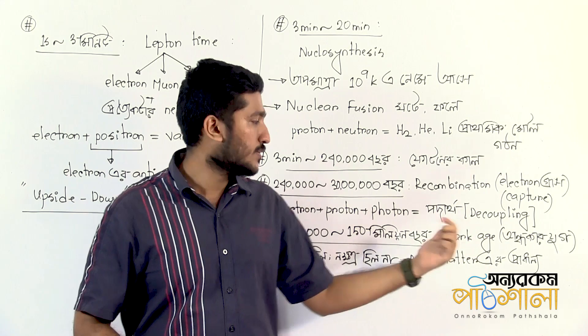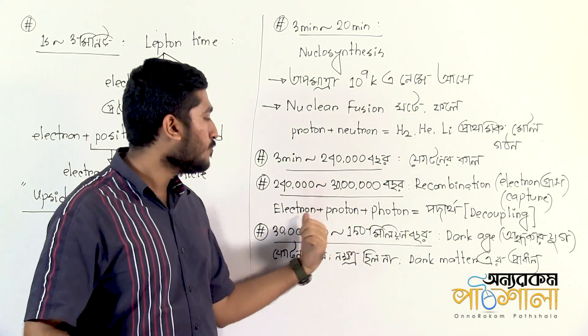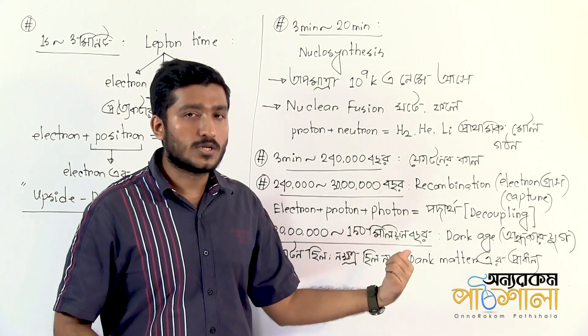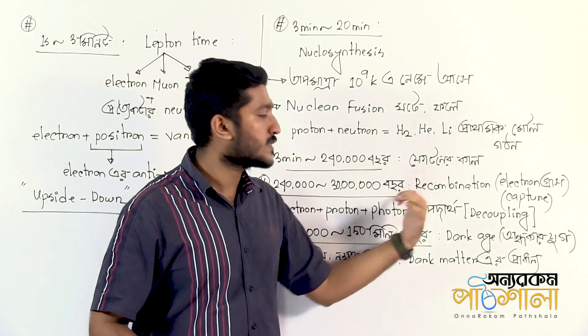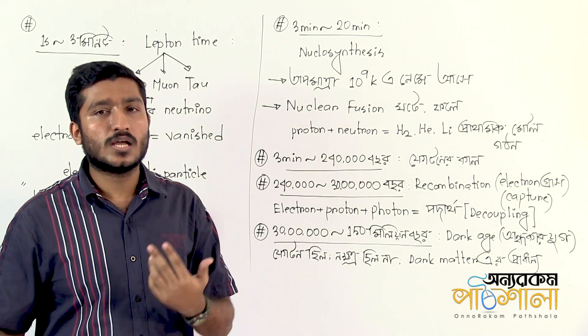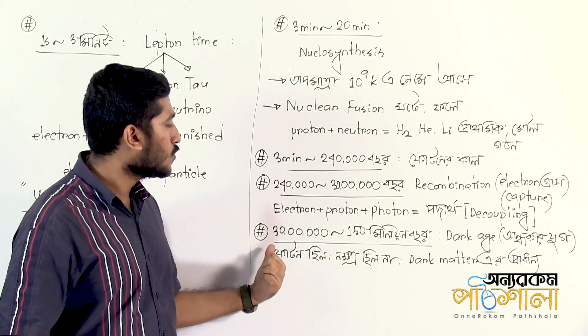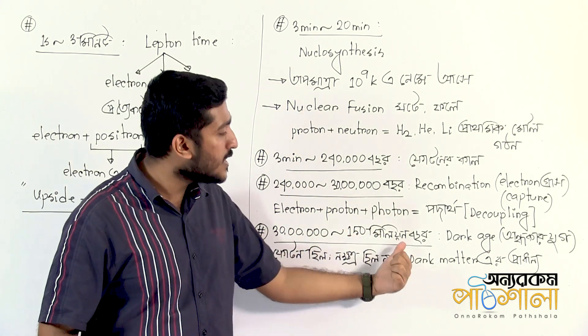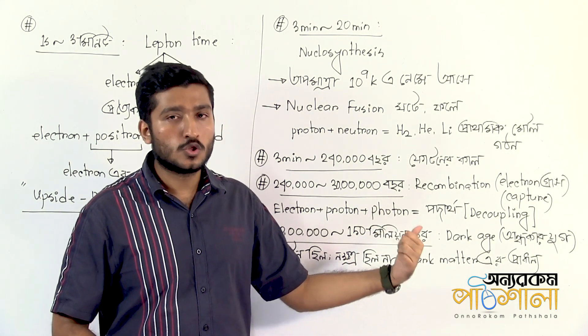Decoupling accompanies recombination. Decoupling means that electrons, protons, and photons, which were previously interacting constantly, now stop interacting. Once electrons combine with protons to form neutral atoms, photons can travel freely without scattering. This photon decoupling is the defining feature of the recombination era.